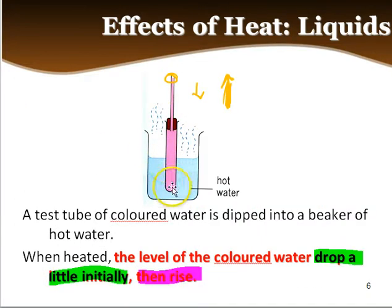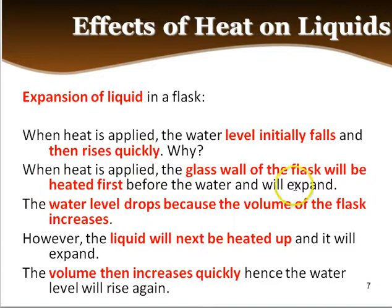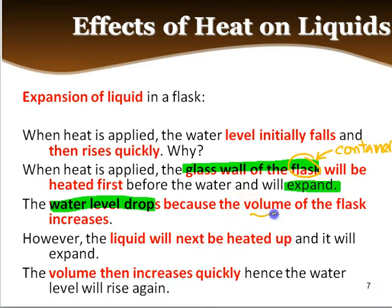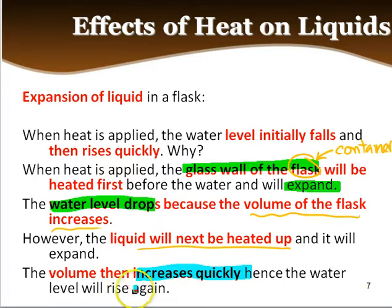Why does the water level initially fall and then rise quickly? Because the glass wall is heated up first. The glass wall expands first, so when the container expands, the water level drops because the volume of the flask increases at the start. However, when the liquid gets heated up next, it expands and its volume increases quickly, hence the water level rises again.